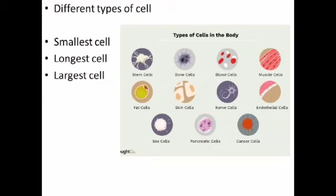In the human body, the largest cell is the ovum or egg cell. However, the neuron cell is considered to be the longest cell. The shape and size of a cell depends on its location and function — each and every cell has its own unique function. Groups of cells unite to form tissues, groups of tissues unite to form organs, and groups of organs unite to form organ systems. Each tissue, organ, and organ system part has its own individual function. Division of labour is not seen in many living organisms — they carry out multiple functions.